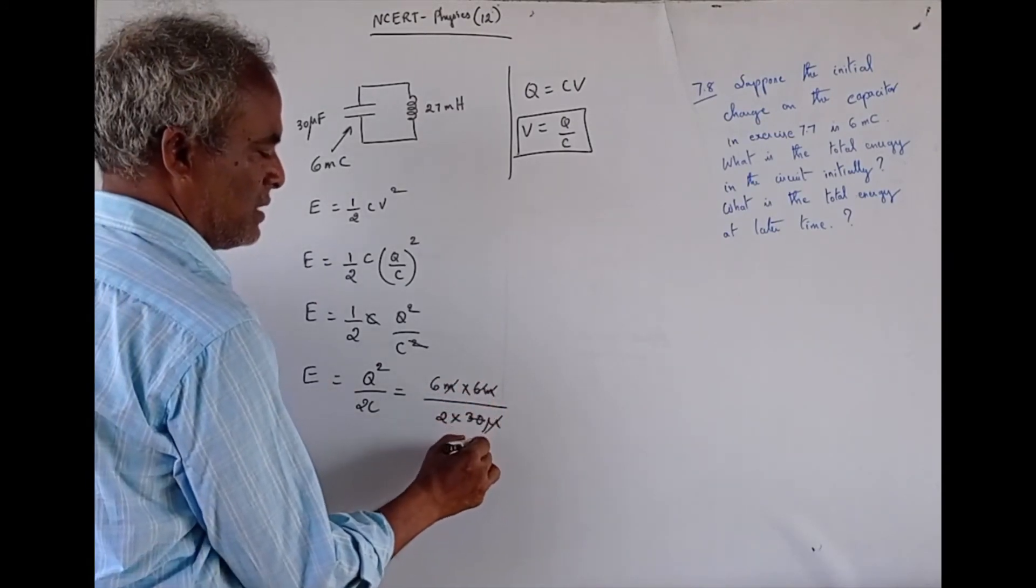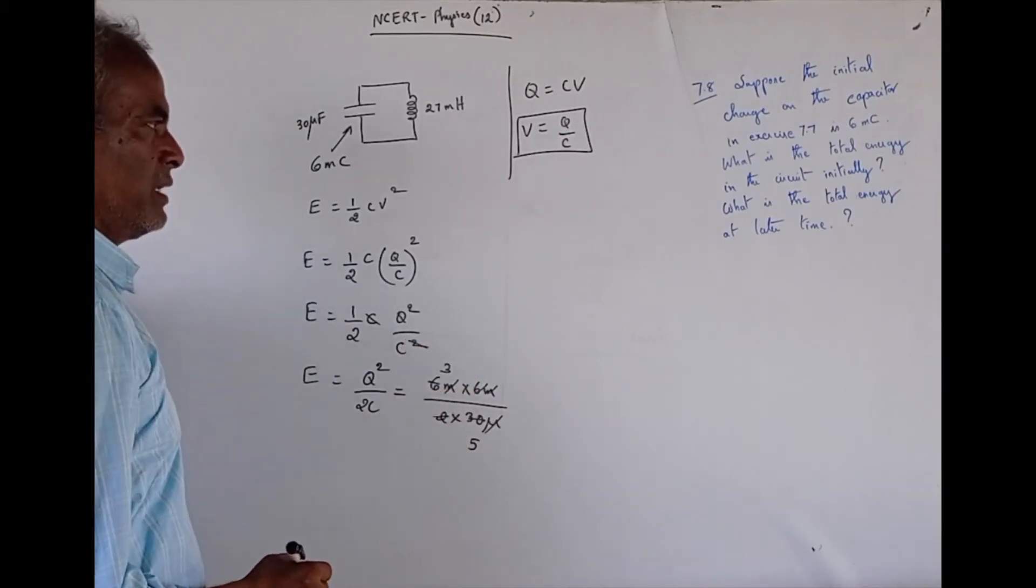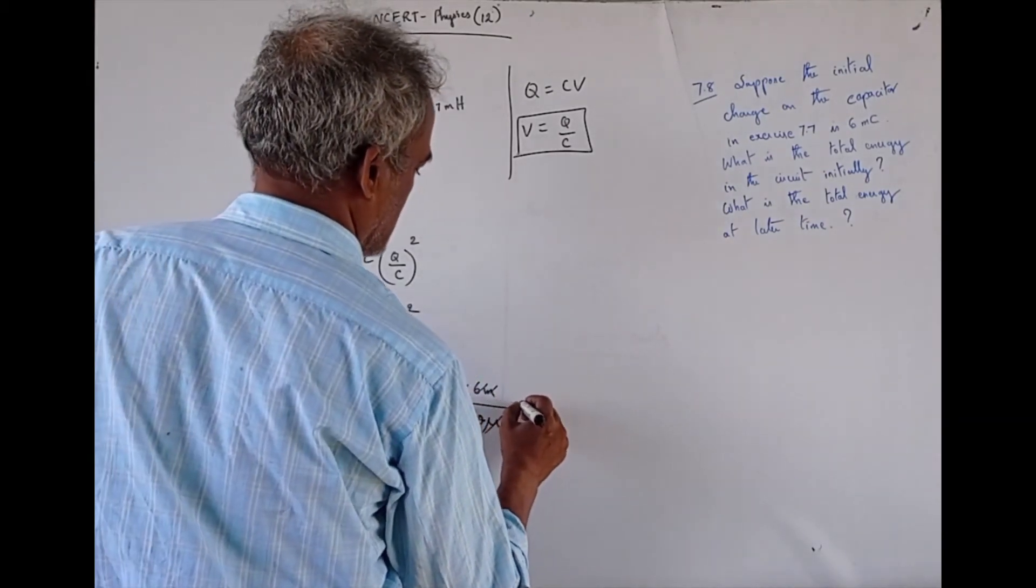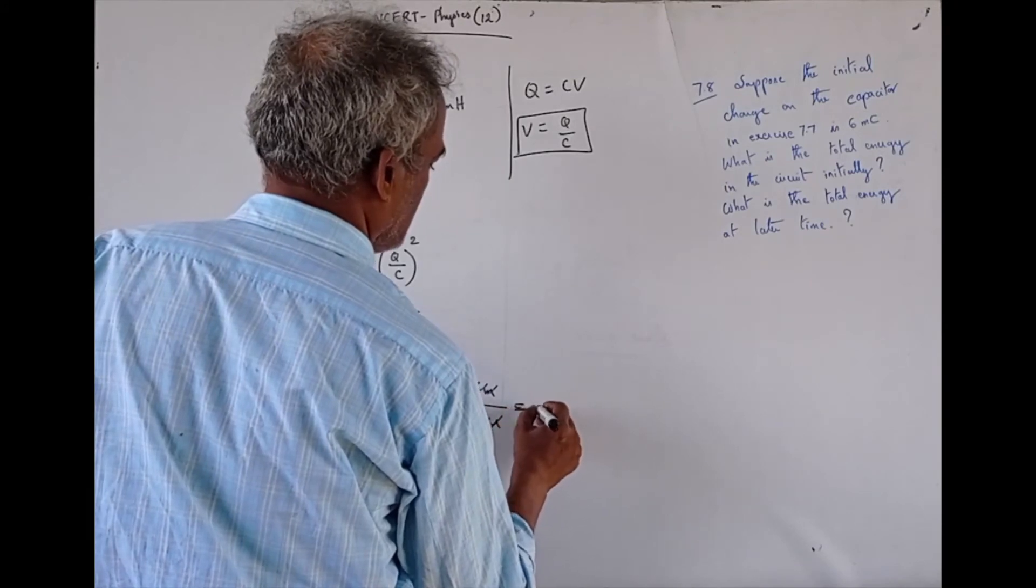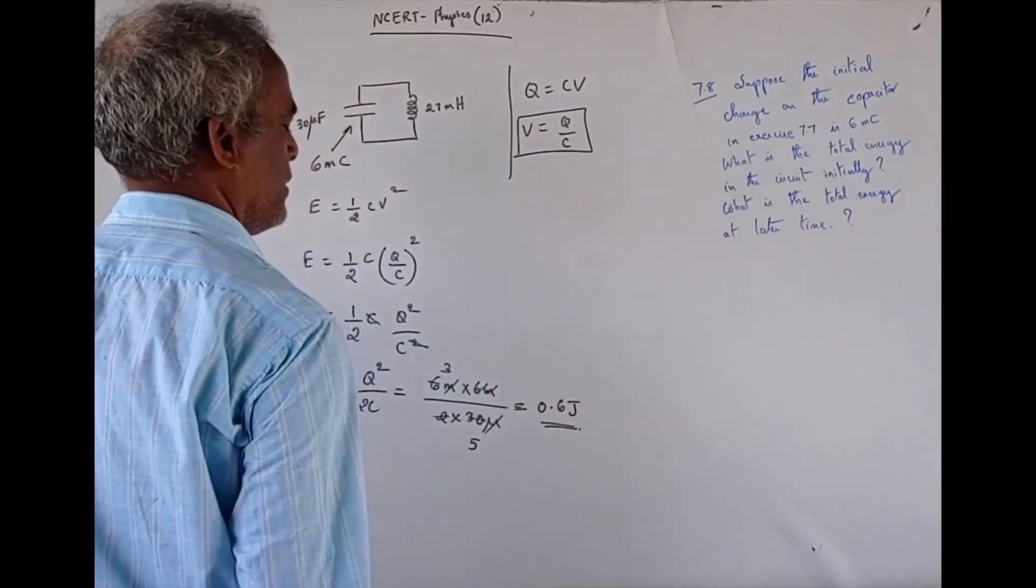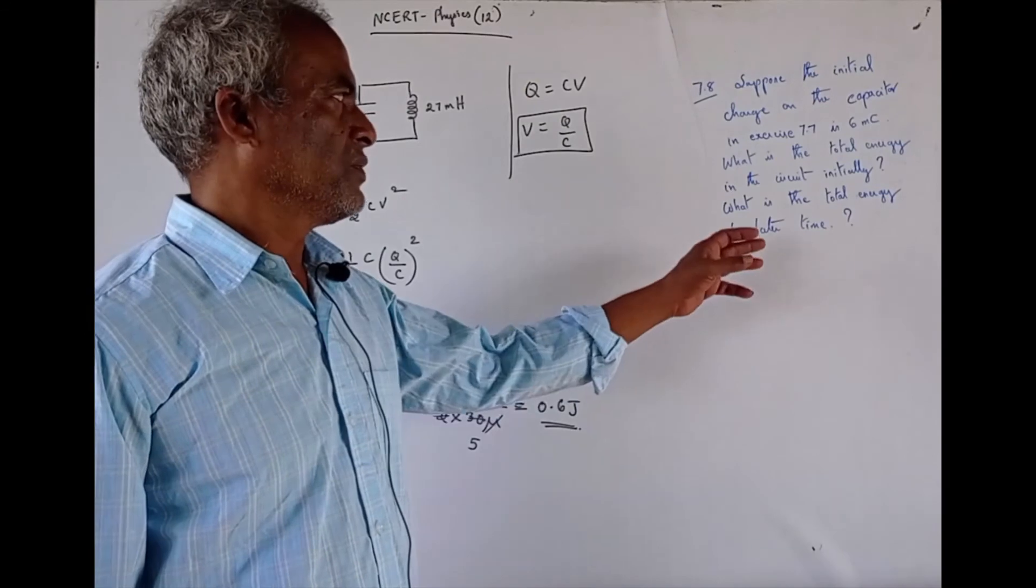6, 5 into 30, 2, 3 times, 3 divided by 5. So, 3 by 5 is 0.6 joules. That is the answer for first part.